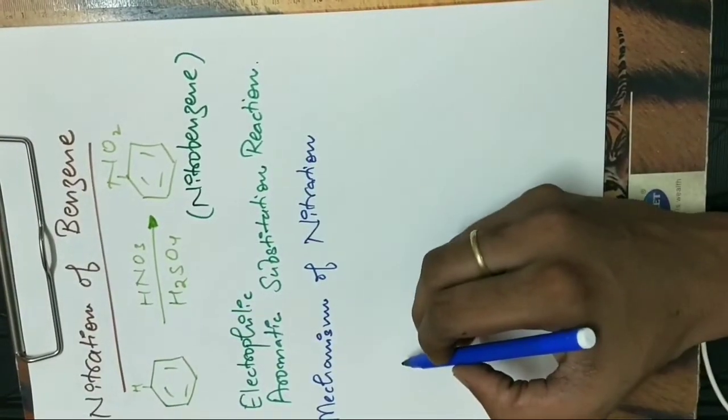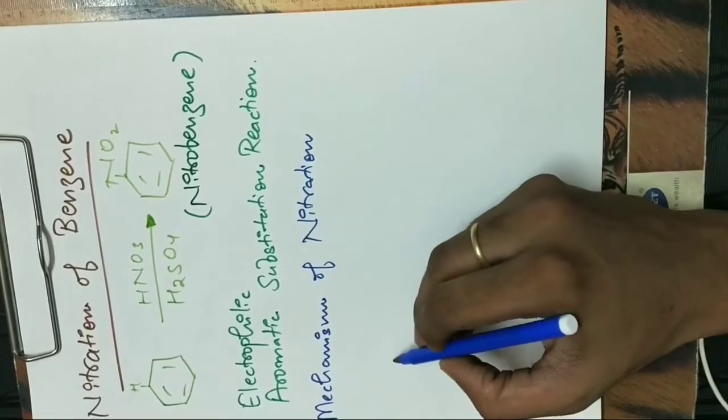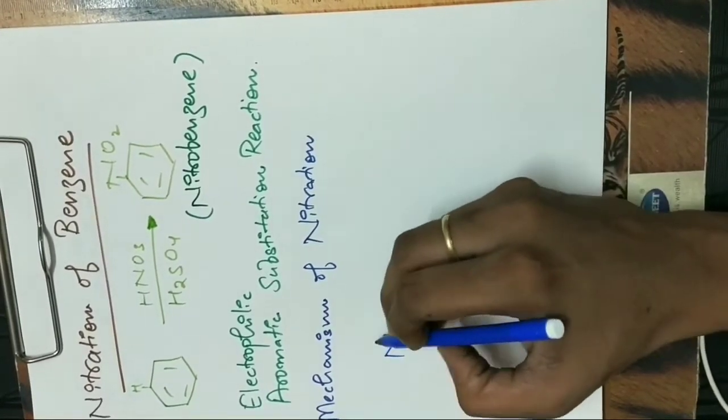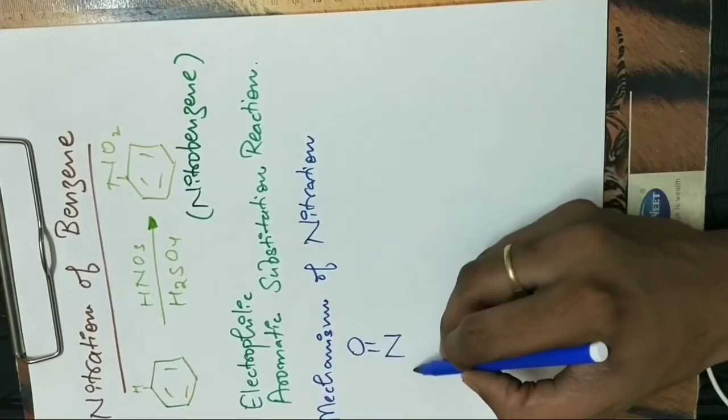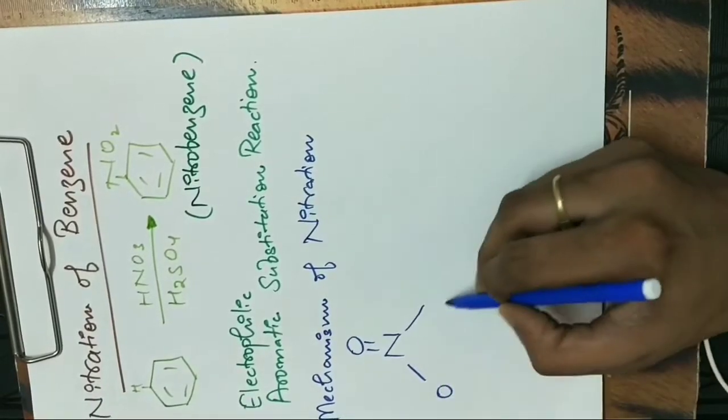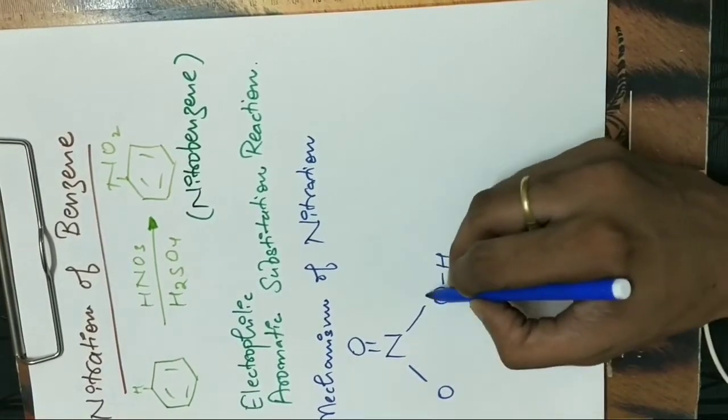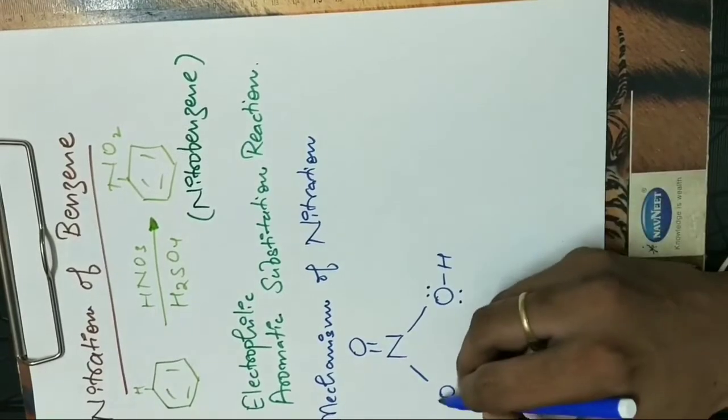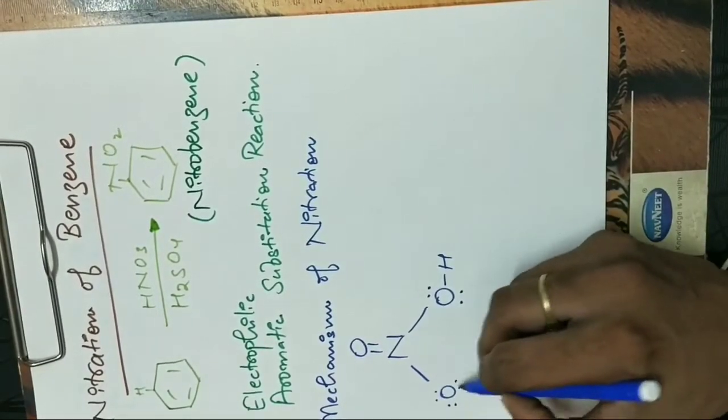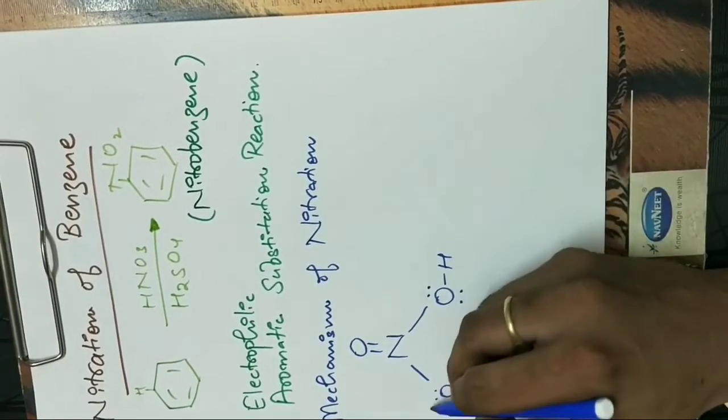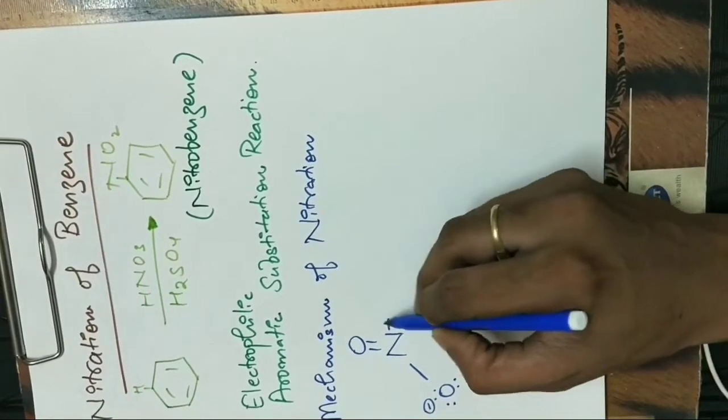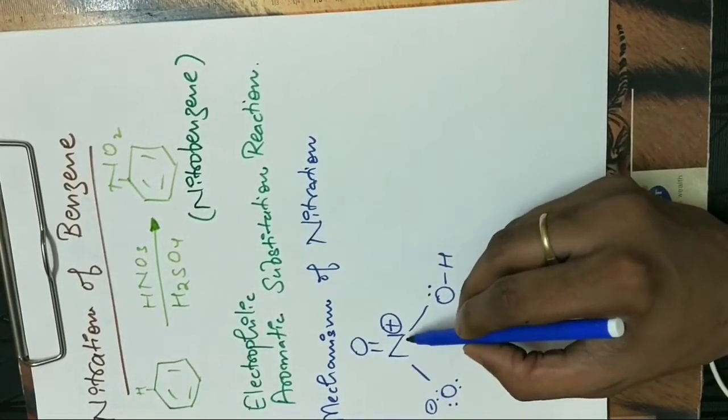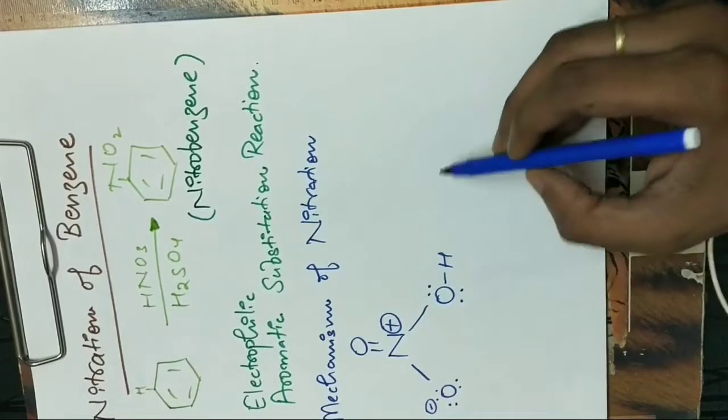Now let us draw the structure of nitric acid, HNO3, which is like this. This oxygen atom bears two lone pairs, and this oxygen atom bears three lone pairs and a negative charge, thus the middle nitrogen atom will bear a formal positive charge.